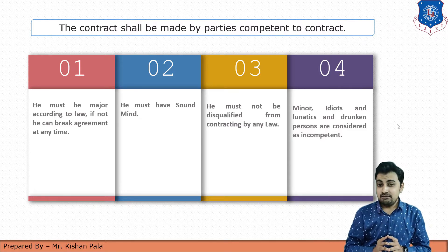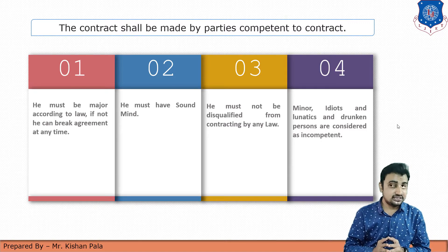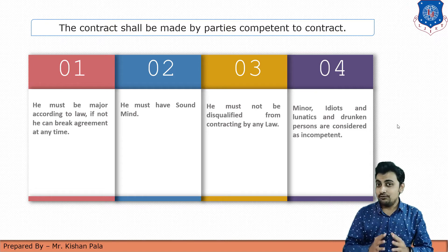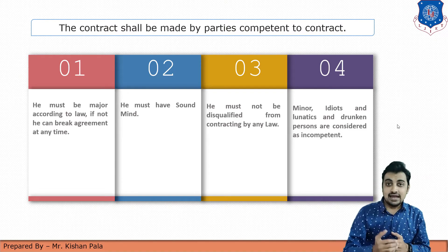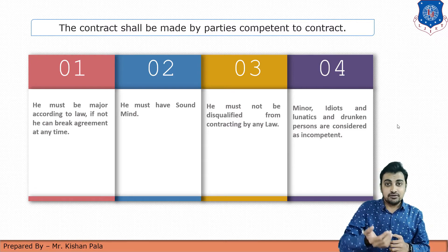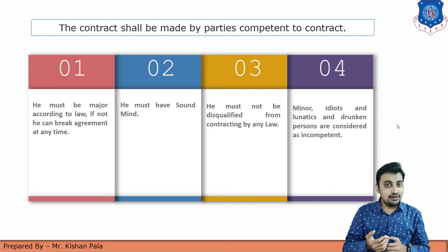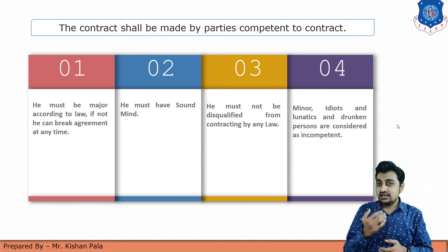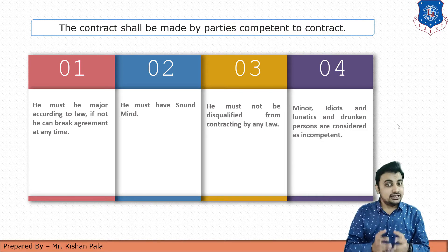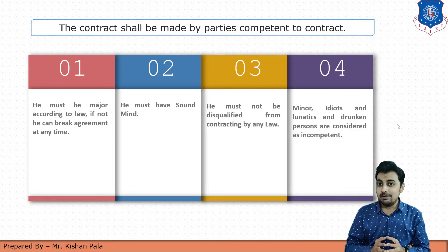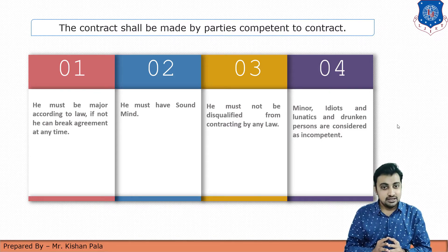The second consideration is that both parties must have a sound mind, so they can understand the offer. The owner can offer particular terms and conditions for any type of structure, and the acceptance by the contractor should also come from someone of sound mind, so they can understand the terms and conditions prepared by the owner or client.